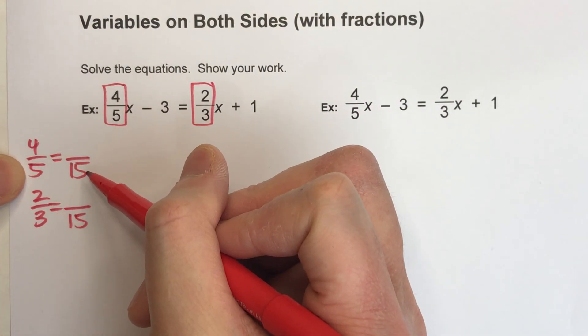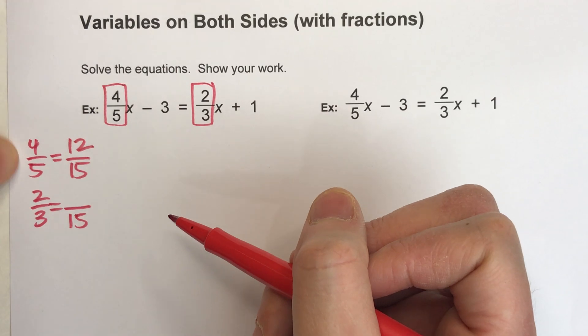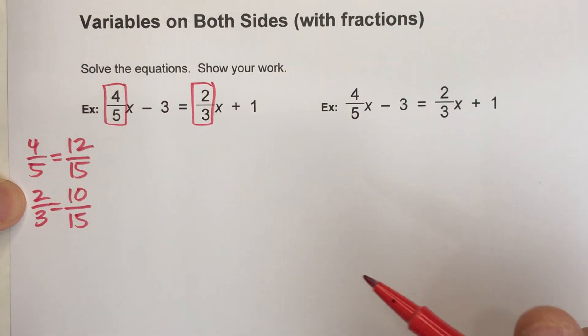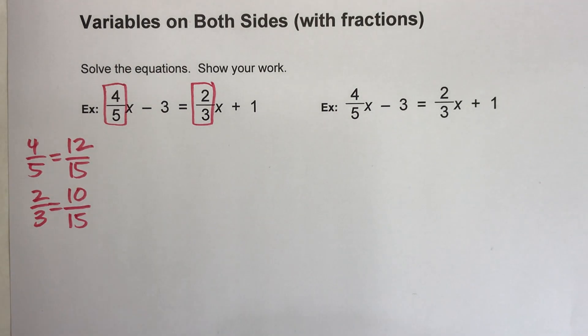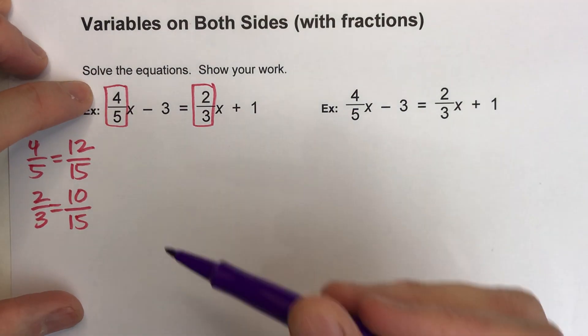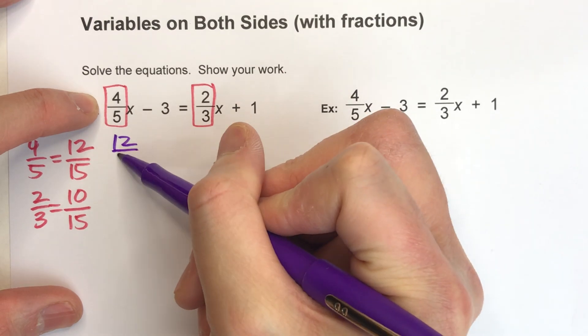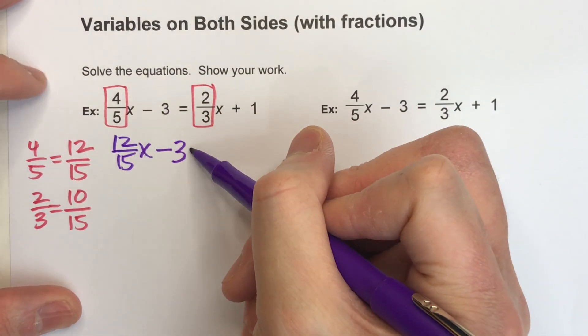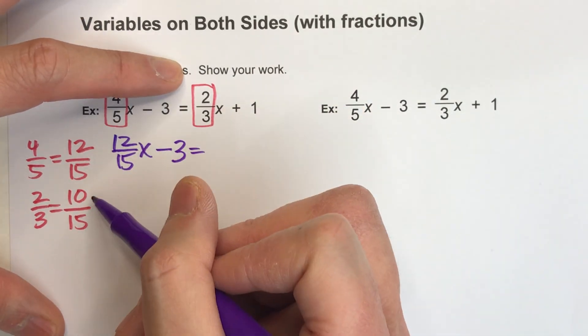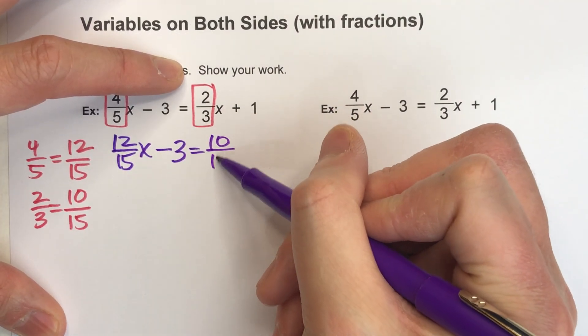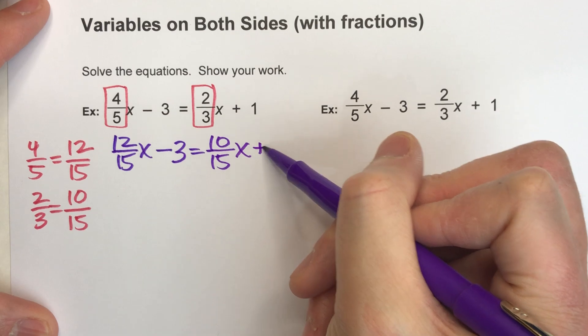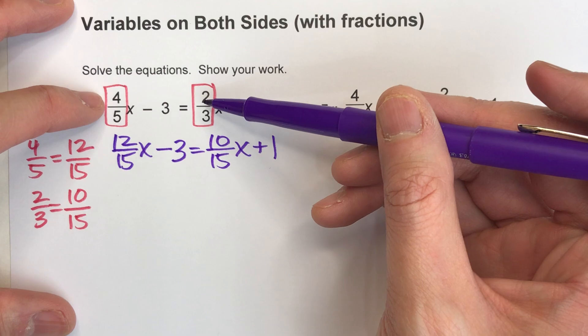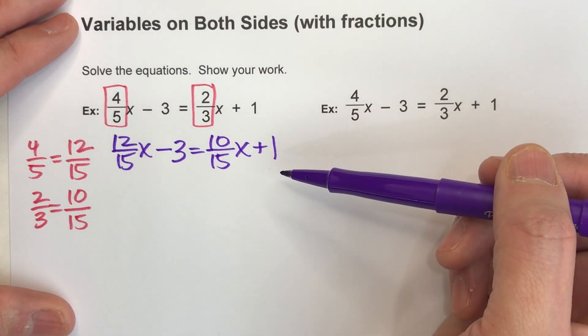5 times 3 is 15, so 4 times 3 gets me my top. 3 times 5 gets me 15, so 2 times 5 gets me my top here. Now I can rewrite this equation. So instead of 4/5x, I'll use 12/15x - 3 = instead of 2/3x, I'll do 10/15x + 1. All I've done here is rewritten the equation so that the fractions have a common denominator.